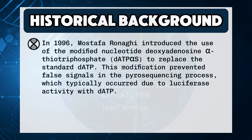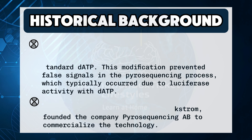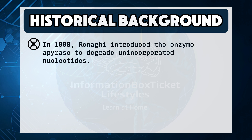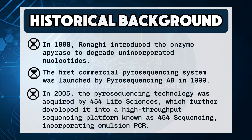This modification prevented false signals in the pyrosequencing process, which typically occurred due to luciferase activity with dATP. In 1997, Nairin, Uhlin, Renagy, and Pedersen, together with Bjorn Ekstrom, founded the company Pyrosequencing AB to commercialize the technology. In 1998, Renagy introduced the enzyme apyrase to degrade unincorporated nucleotides. The first commercial pyrosequencing system was launched by Pyrosequencing AB in 1999.